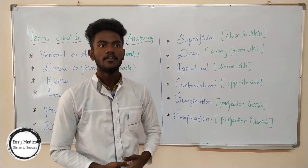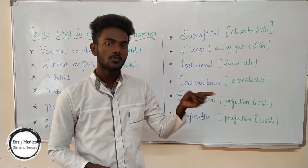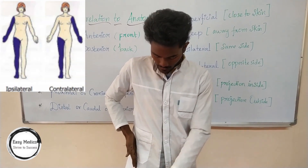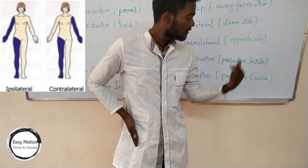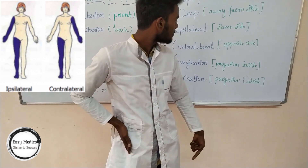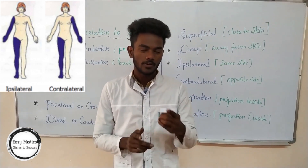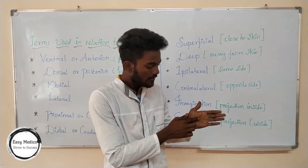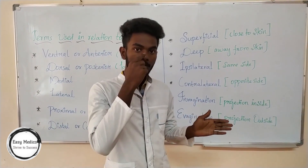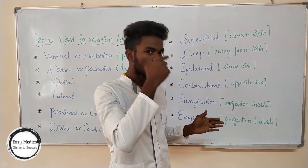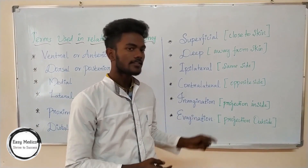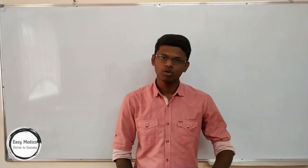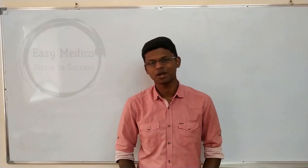Next: ipsilateral and contralateral. If you look at the image — for example, the right thumb — the right thumb on the same side is ipsilateral. The opposite side, the left thumb compared to the right, is contralateral. Next: invagination and evagination — for example, our nose projects outward from the face; that projection outward is evagination. A cavity or inward projection is invagination. Thanks for watching, friends. For more videos in more languages and subjects, subscribe to our channel. Thank you.